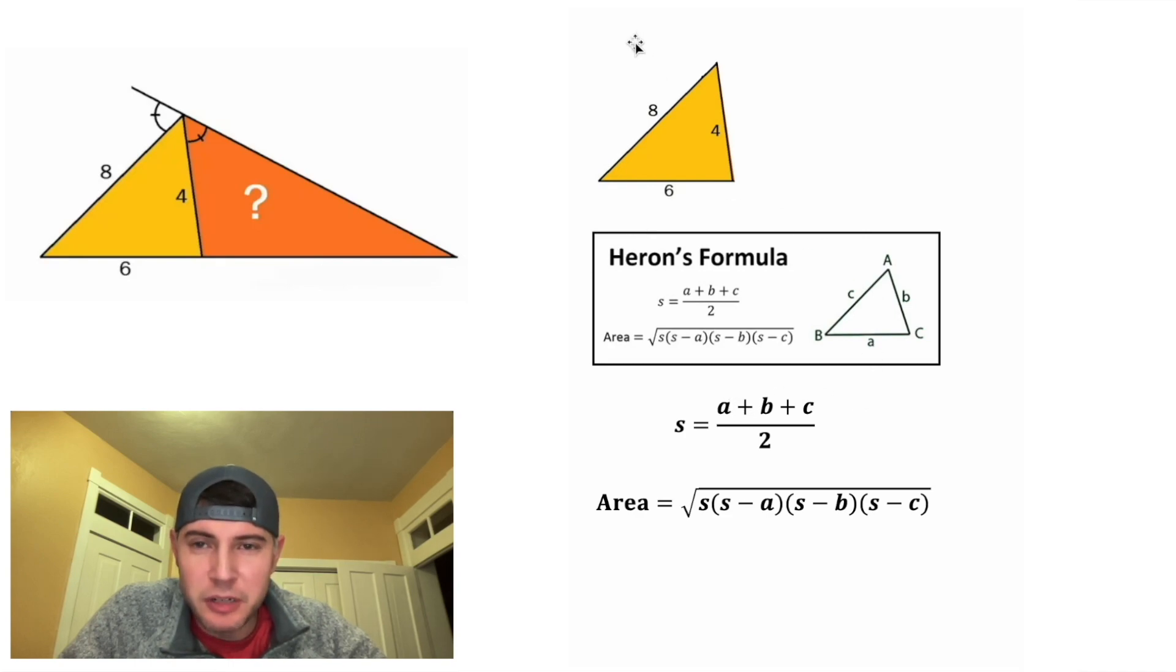For A, B, and C, we're going to plug in the sides 8, 4, and 6. And 8 plus 4 plus 6 divided by 2 is equal to 9. So in the place of all these S's, I'm going to plug in 9.